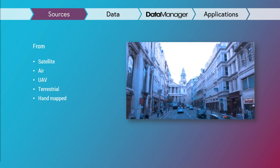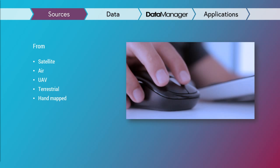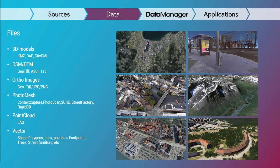Starting from the sources — you're collecting data from satellite, aerial data, UAV, doing surveying from the ground or hand-mapped — you can then import those to Data Manager as files, services, or connect directly to a database. You can import 3D models in different file formats using OGC standards, terrain models, ortho imagery, photo meshes from different vendors and tools. You can even upload point clouds and use that for different purposes in Data Manager, as well as vector data.